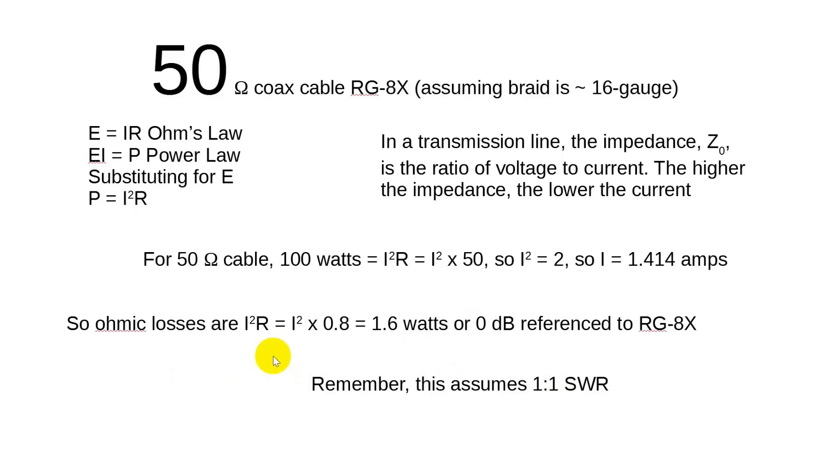Because if you have a higher SWR, the current that leaves your transmitter hits a mismatched antenna and gets bounced back. So the part that hit the antenna gets radiated, but some of that is sent back. And the part that is sent back is subject to the resistance in the wire. So the higher the SWR, the greater your losses are going to be. But we're not looking at that in this video.